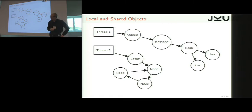So here is our solution. What we try to do is to differentiate the objects that are local to a thread from objects that are accessed or at least reachable by multiple threads. Here, we have a first thread pointing to a queue, which itself represents a message and a hash and a key and a value. And then the other thread references a graph with a few nodes.